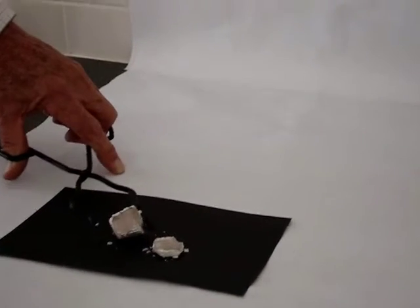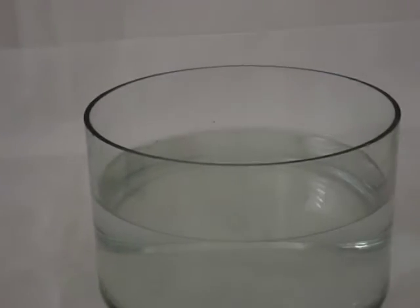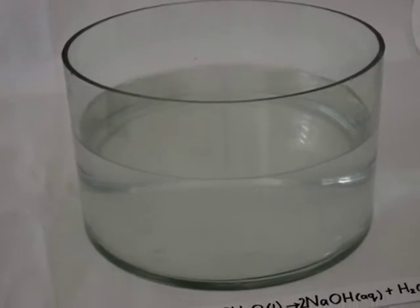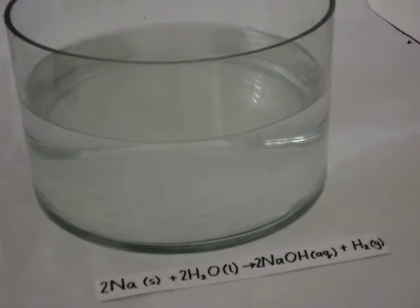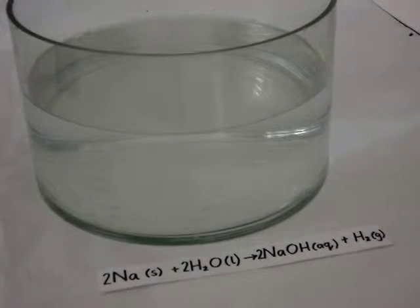Now, we're going to take a small piece of sodium and place it into water. Only take a small piece because this is quite dangerous. And what's going to happen is the sodium is going to float because it has a lower density than water. It's going to form sodium hydroxide, which is a base, and hydrogen gas.